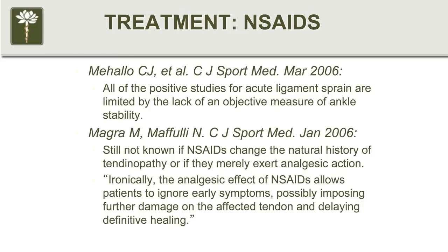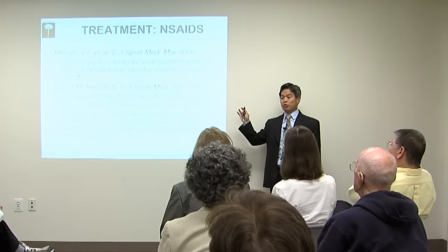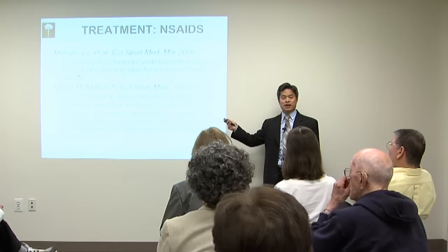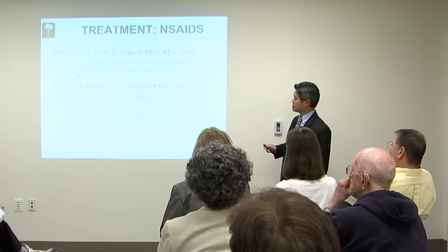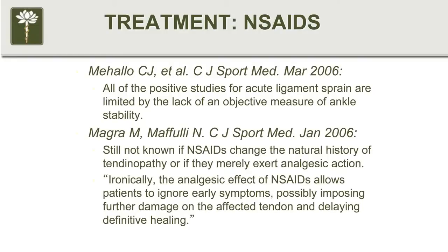Anti-inflammatories — all the studies showing that acute ligament sprain pain improves never measure ankle stability. So yes, your pain might be getting better, but we don't know if we're causing problems with ankle stability because it's never actually been measured. It's still unknown if anti-inflammatories actually change the natural history of tendinopathy or if all they're doing is covering up the pain.